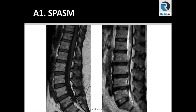Let's look at spasm. Spasm causes straightening of the lumbar spine and is a very common finding — but how do you report it? There is a very simple way. If a straight line crosses through the middle of four consecutive vertebral bodies, then report it as a straightened, spasmodic lower back, as seen on the right side. In a normal lordotic lumbar spine, such as the one on the left side, four consecutive lumbar bodies almost never follow a straight line.